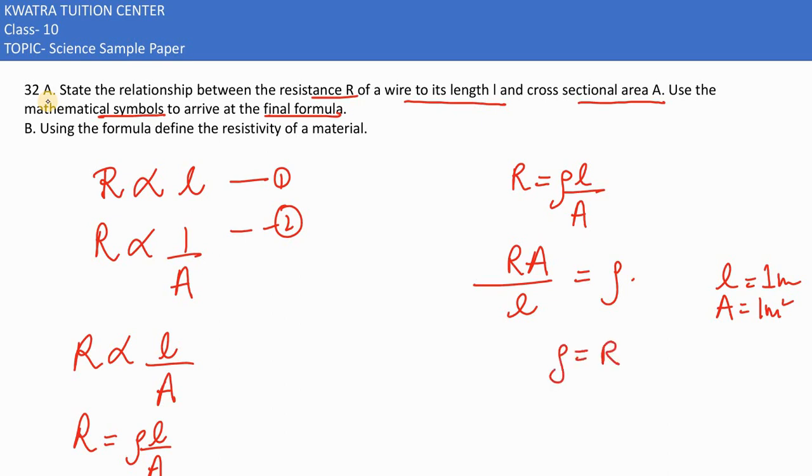Resistivity is the resistance offered by a wire of length 1 meter having a cross-sectional area of 1 meter square.